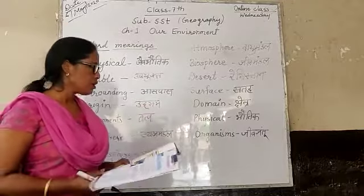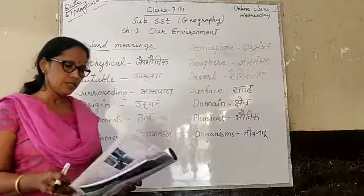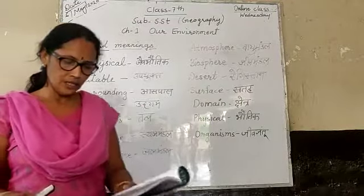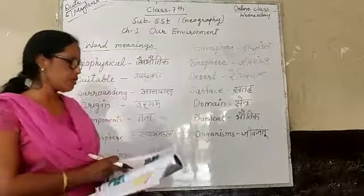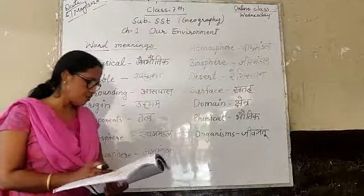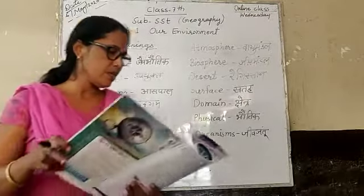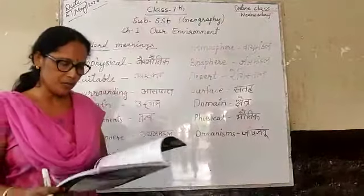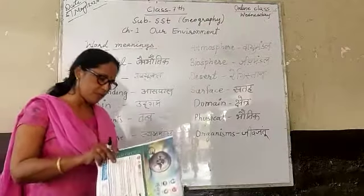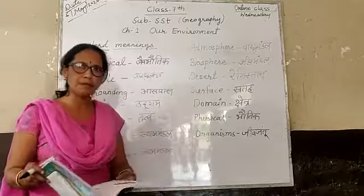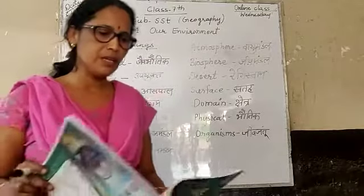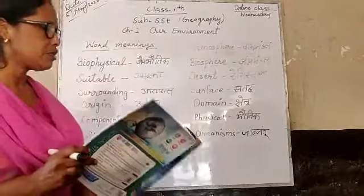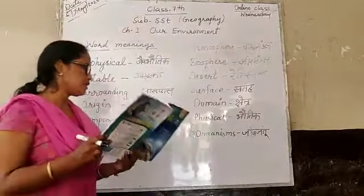Toh bachon, ismein agar, hamare char Spheres hain — Lithosphere, Hydrosphere, Atmosphere, aur Biosphere. In teeno se — Atmosphere, Lithosphere, aur Hydrosphere — milkar banta hai Biosphere, yaani Jeev Mandal. Aur isi se hamare Ecosystem bana rehta hai.